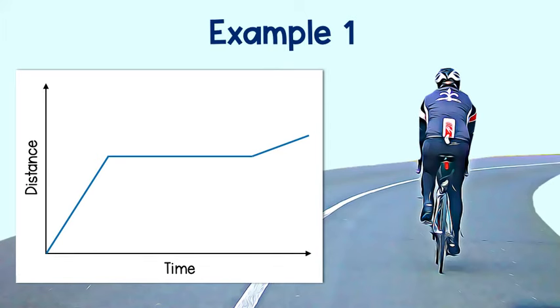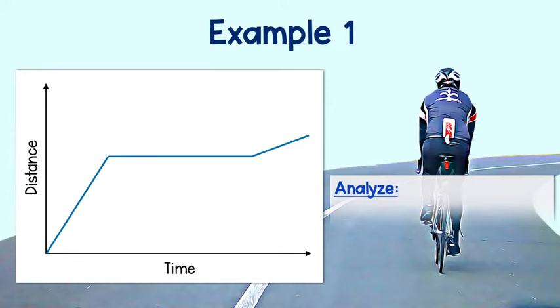For example, this graph shows the relationship between the distance a bicyclist travels over time. Since there are no numbers, we cannot get specific data. However, we can analyze this graph.